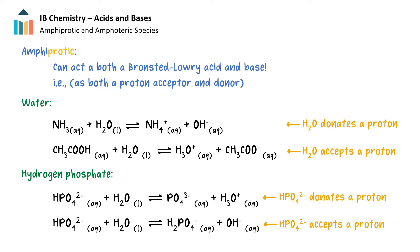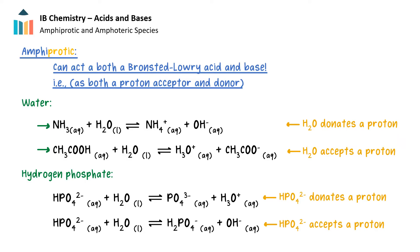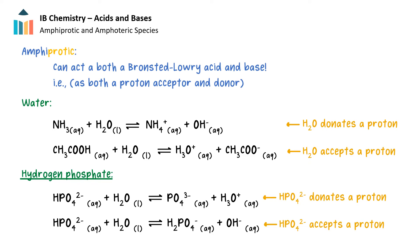For the next part of this video, we'll discuss the topic of amphiprotic and amphoteric species. As we have seen with the autoionization of water, the water molecule can act as a proton donor or an acid, but it can also act as a proton acceptor or a base. Chemical species that can act as both a Bronsted-Lowry acid and a Bronsted-Lowry base are called amphiprotic. Another amphiprotic species is the hydrogen phosphate ion HPO4 2-. Equations can be written that show hydrogen phosphate can both donate and accept a proton. Amphiprotic species will tend to be weak acids or weak bases.